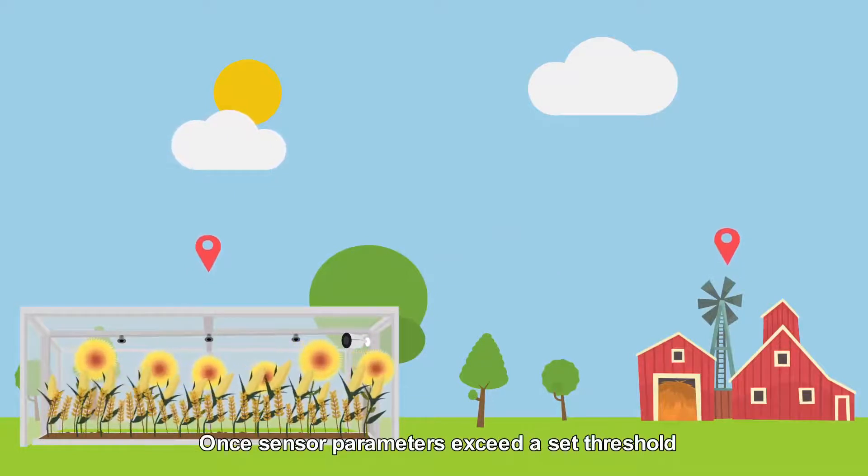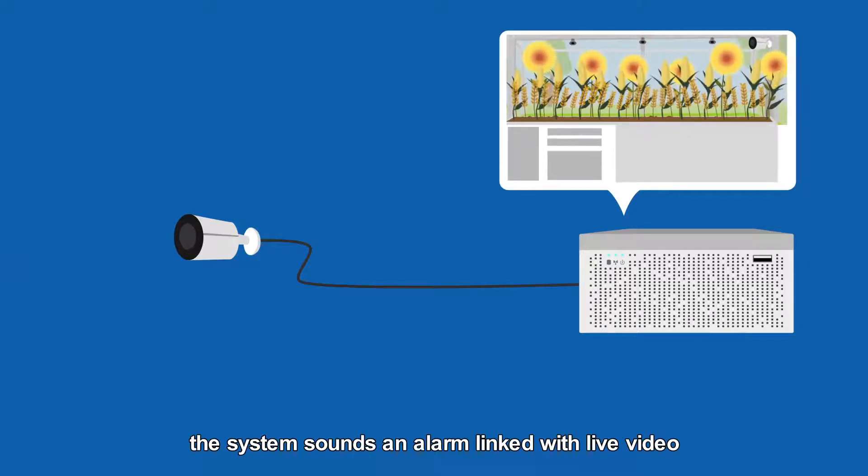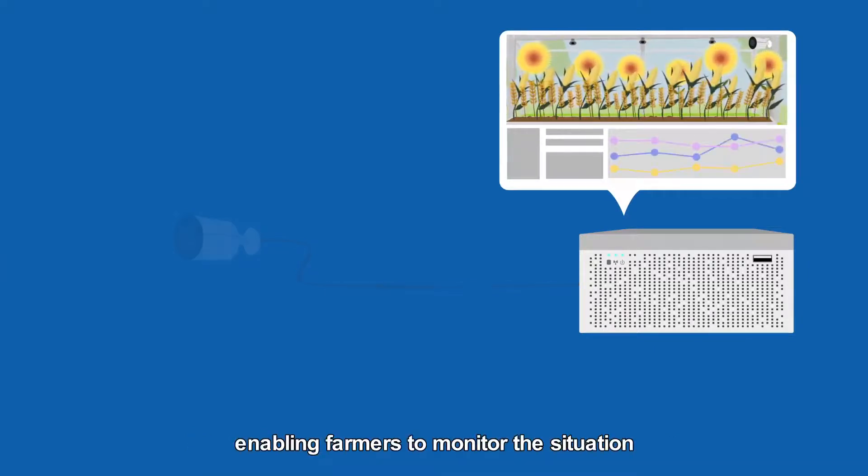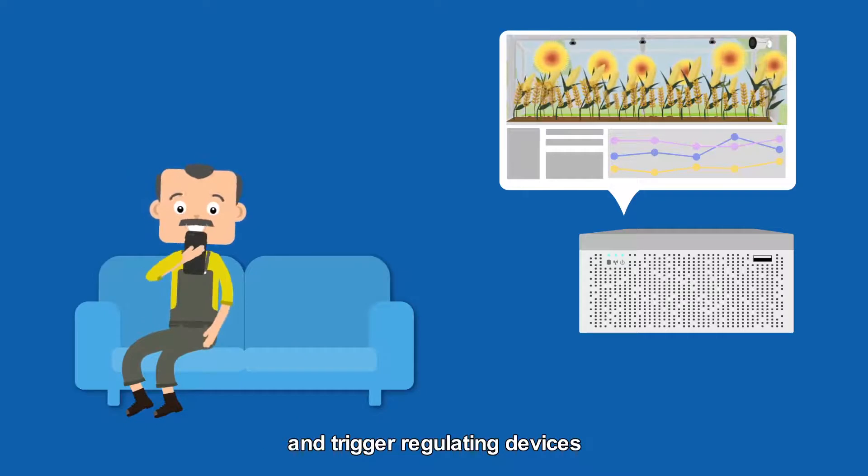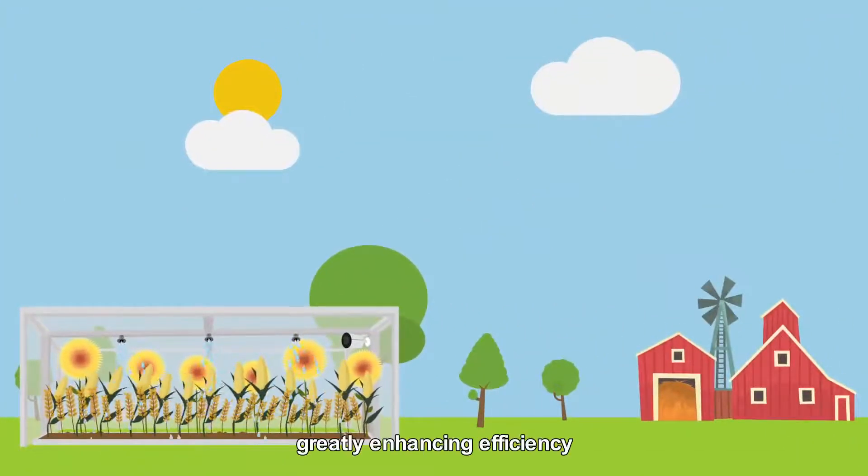Once sensor parameters exceed a set threshold, the system sounds an alarm linked with live video, enabling farmers to monitor the situation and trigger regulating devices, such as spray nozzles, greatly enhancing efficiency.